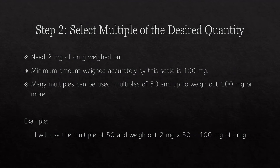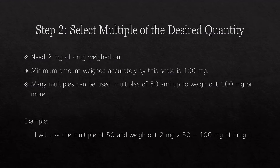Step two: select the multiple of the desired quantity. Continuing with the example, let's say we need 2 milligrams of drug weighed out, but the minimum amount weighed by this scale is 100 milligrams. You can use any multiple that makes 2 milligrams equal 100 milligrams or more. In this example, I'm going to use the multiple of 50 to reduce waste: 2 milligrams times 50 equals 100 milligrams of drug.